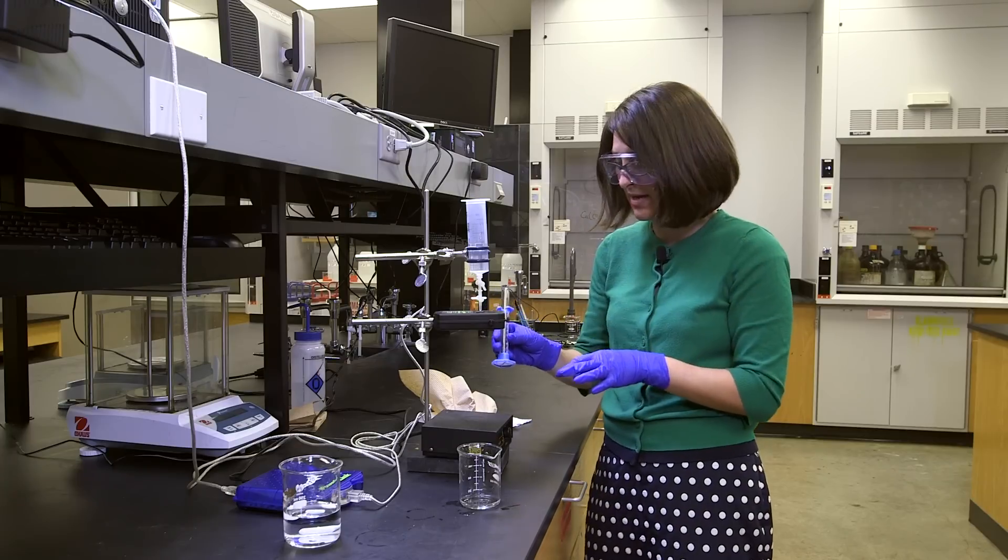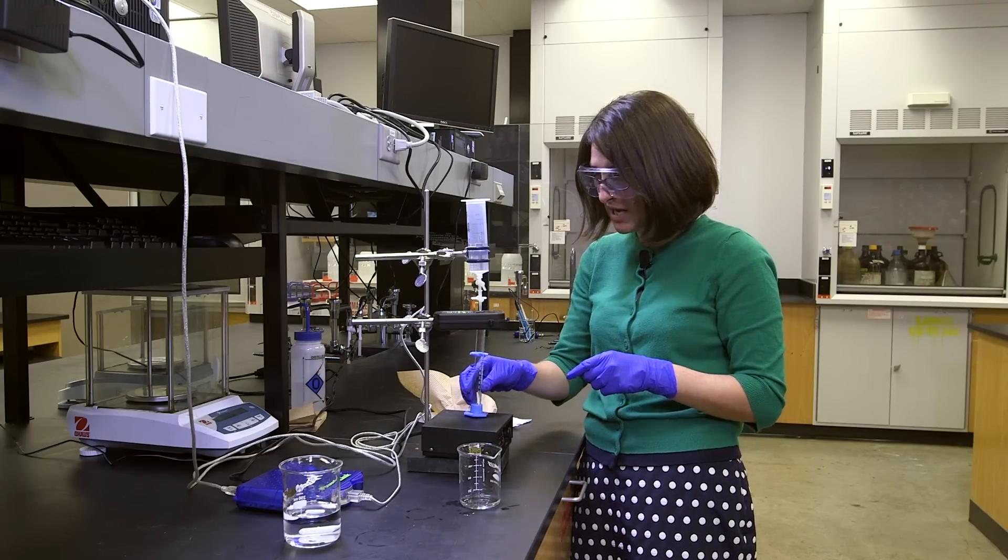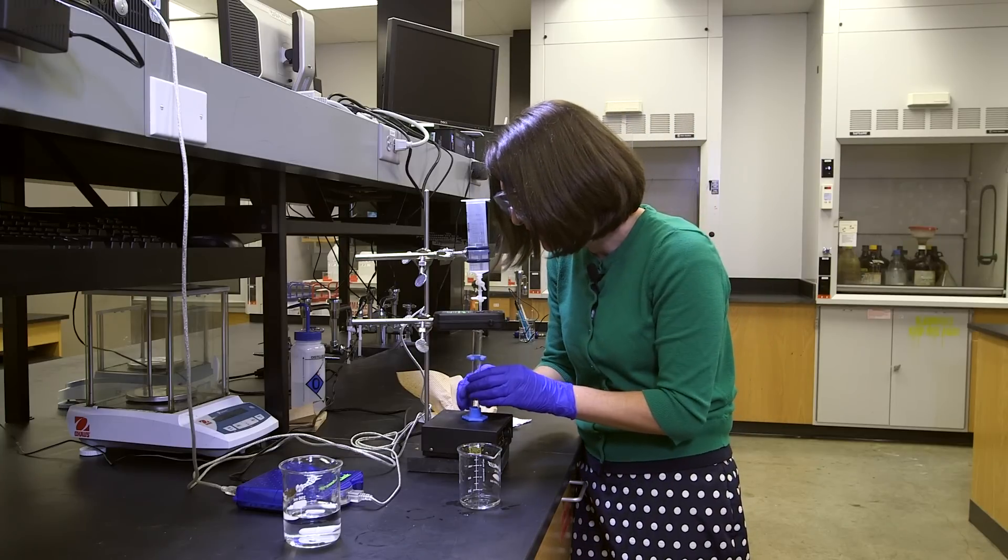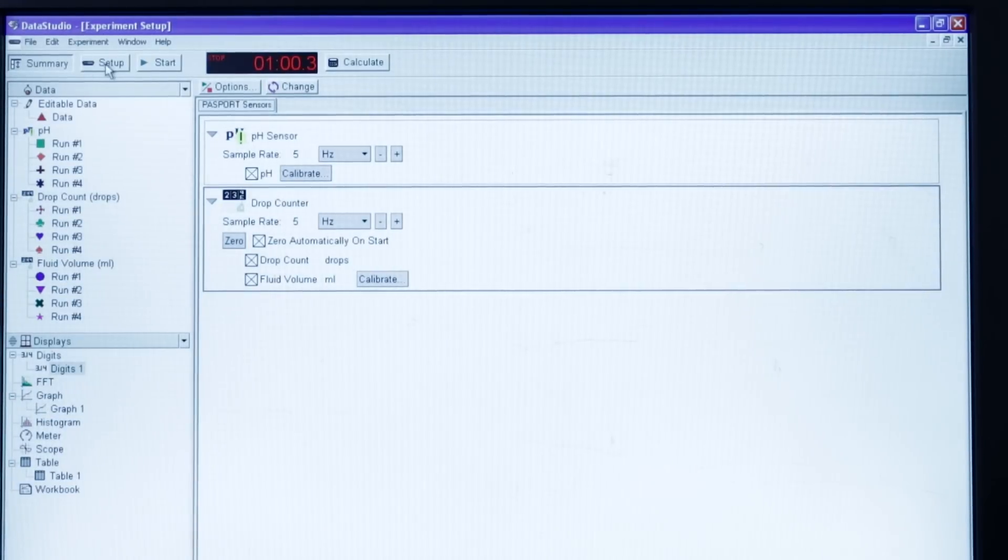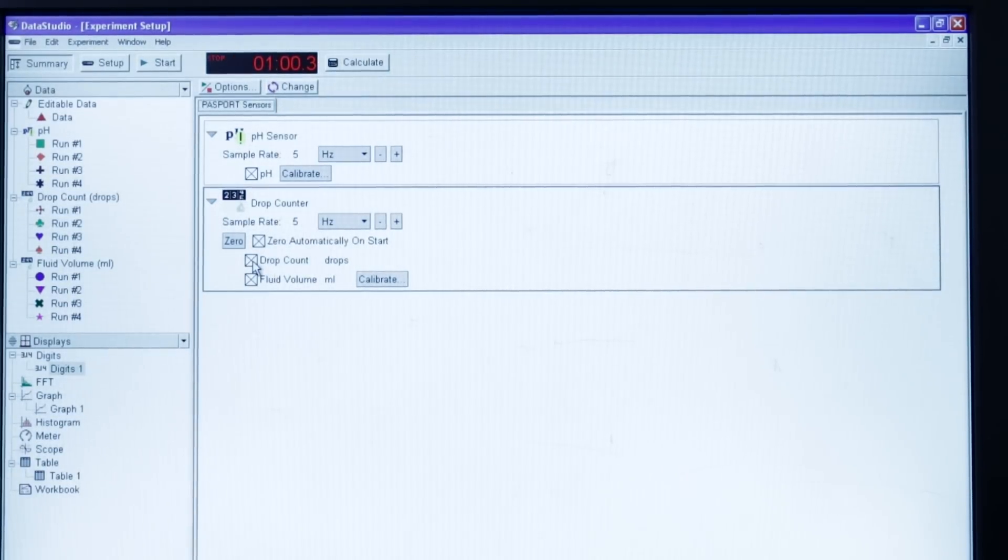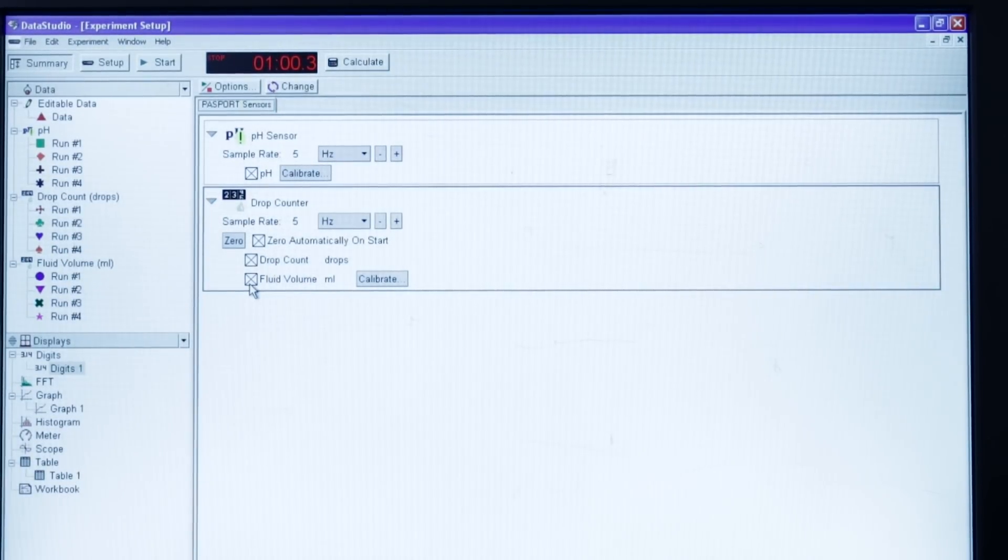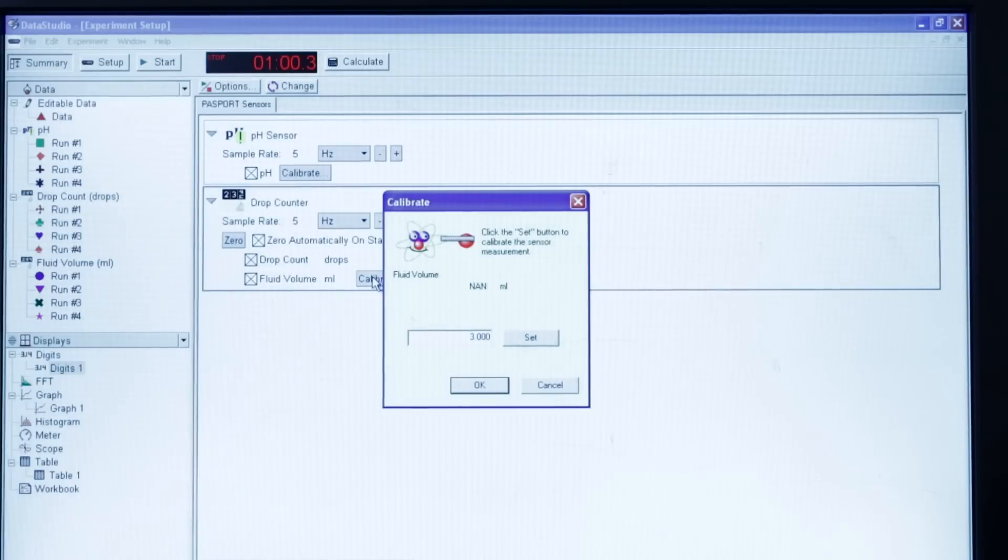All right, so now that I've set the drip rate, now I need to measure the volume and then I'll have to calibrate. I'll have to tell the computer what that volume was. So I'm going to go up to my setup, drop counter. I want to make sure that these boxes have X's, that it's going to zero automatically when I start. It's going to have a drop count. It will count the number of drops. And I'm going to tell it the fluid volume. So I'm going to click calibrate.